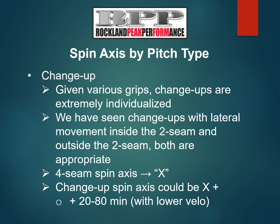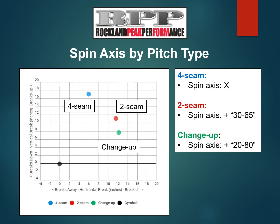Given the various grips for a changeup, its movement pattern is highly individualized. As a result, our recommended spin axis range is wider than the two-seam. We have seen changeups with lateral movement inside the two-seam and outside the two-seam — both are effective and appropriate. Generally, we'd like to see further movement along the spin axis clock by as much as another 20 to 80 minutes. If your four-seam is at 40 minutes, then the axis on your changeup could be as little as 60 minutes or as high as 120 minutes. Generally, if the spin axis is higher than the four-seam with less velocity, the pitch has an effective movement pattern. With the four-seam at 40 minutes, a changeup at 1:58 — an additional 78 minutes on the clock — with lower velocity is a highly effective pitch.